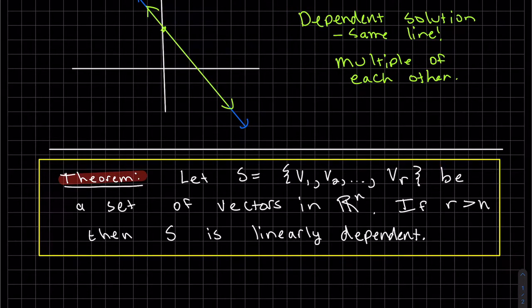Okay, so if we have a set S that has R elements, and it's a set of vectors in Rn, well, if R is greater than N, then S must be linearly dependent. That kind of is a spin-off of the last theorem that we had, where if you have too many, it's going to be dependent.